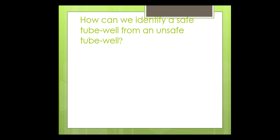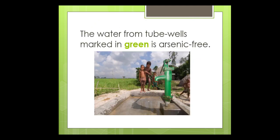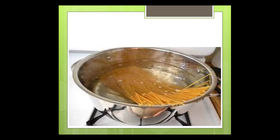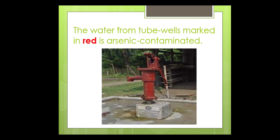So how can we identify a safe tubewell from an unsafe tubewell? The water from tubewells marked in green is arsenic-free — it is safe water that can be used for drinking or cooking. On the other hand, the water from tubewells marked in red is arsenic-contaminated water. It is not safe and we should not use it for drinking, cooking, or any other uses.